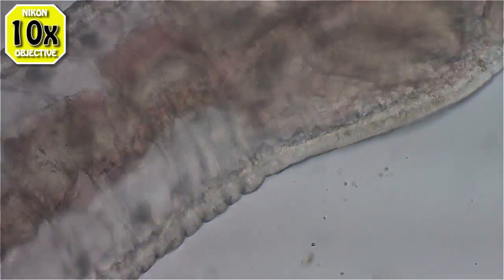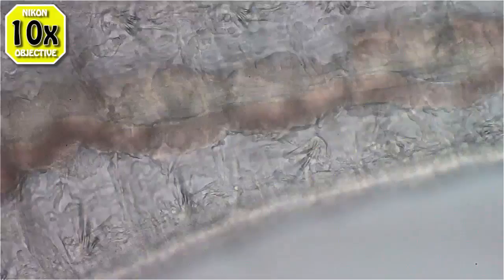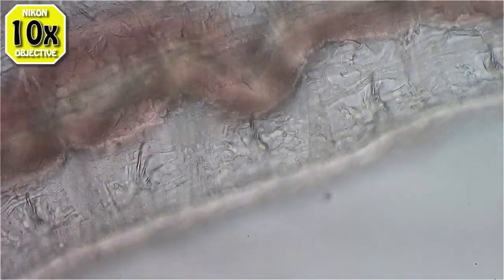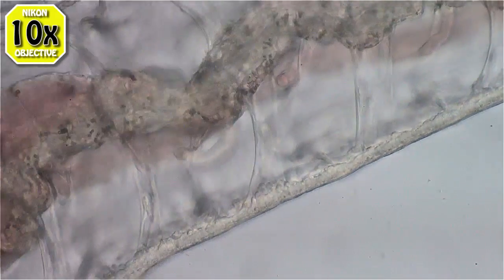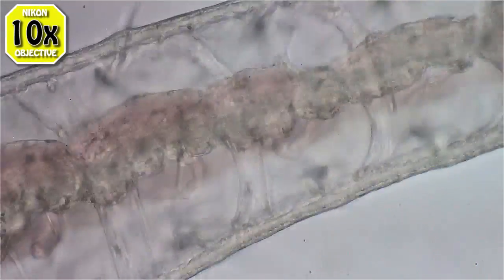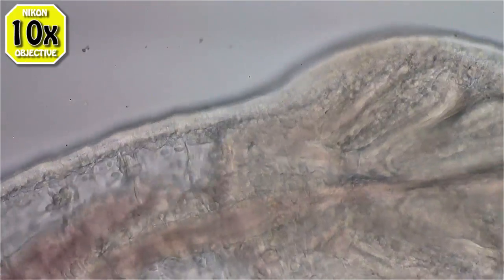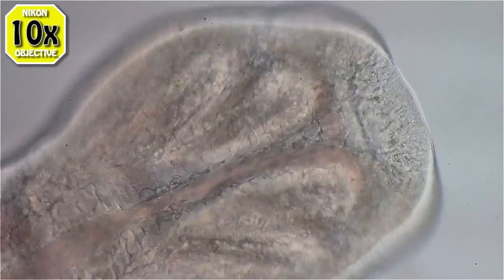And it looks like some of them, I'll just switch to 20x here, Nikon 20x plan Apo lens. Now you can see the sections inside the body. The segment dividers I guess.